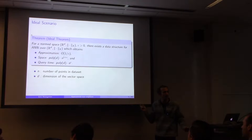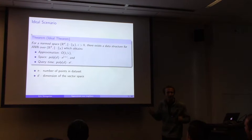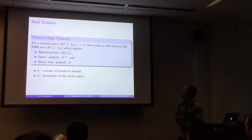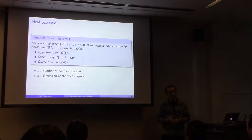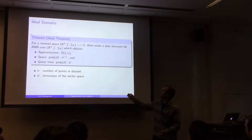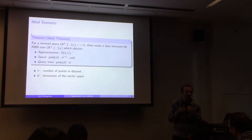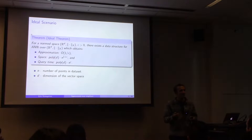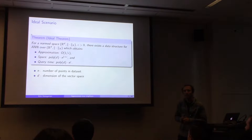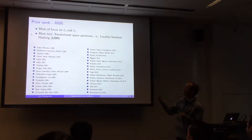Why not hope for better? It's tricky to do lower bounds for these data structure problems. If you restrict to all the techniques we know for designing algorithms, then yes, we can prove all these things are tight — even for the exact constants. Regarding the random instance: in reality you want worst-case datasets, but for this talk it's useful to think of the random instance.